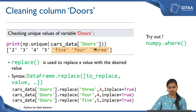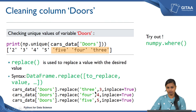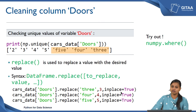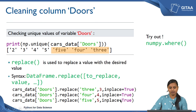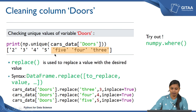Let us take the string '3' first. I am accessing the doors column from cars_data and using dot replace — the first argument is the value to be replaced, that is the string '3', and the second argument is the number 3, with inplace=True so that modifications are reflected back in the data frame. Similarly I have done it for the strings '4' and '5'. Now I have replaced all string values to numbers and have consistent values: 2, 3, 4, and 5.